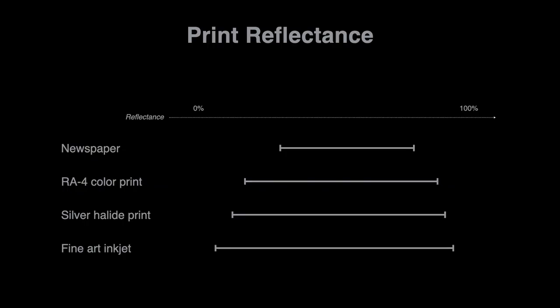The dynamic range of prints depends on many factors, such as the paper quality, the ink, the dye, pigments. We see noticeable variations from the cheapest newspaper with very limited range to the most expensive fine art print, which has much better dynamic range, but still nowhere near what we have with HDR displays.